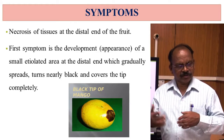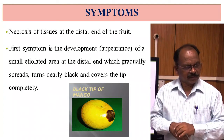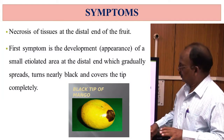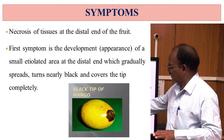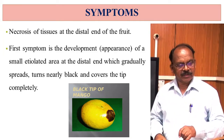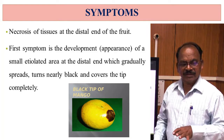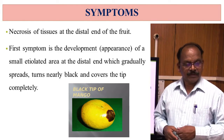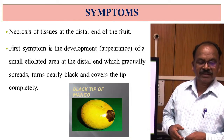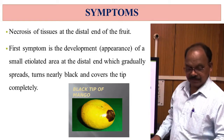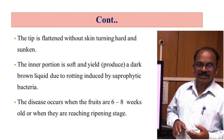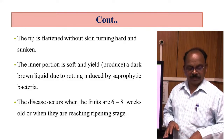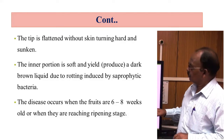The symptoms of black tip of mango are characterized by necrosis of the tissues at the distal end of the fruit. The first symptom is the development of a small etiolated area at the distal end, which gradually spreads, turns nearly black and covers the tip completely. The tip is flattened, with skin turning hard and sunken. The inner portion is soft and produces dark brown liquid.